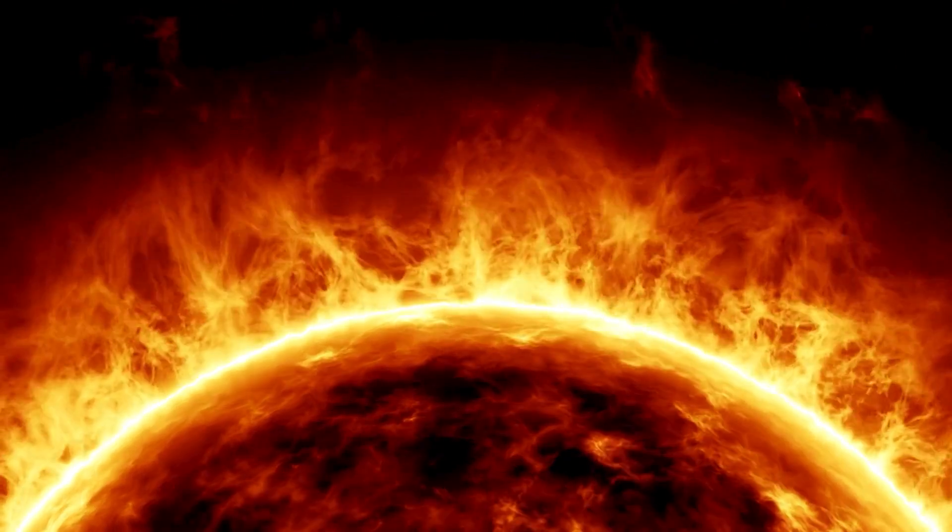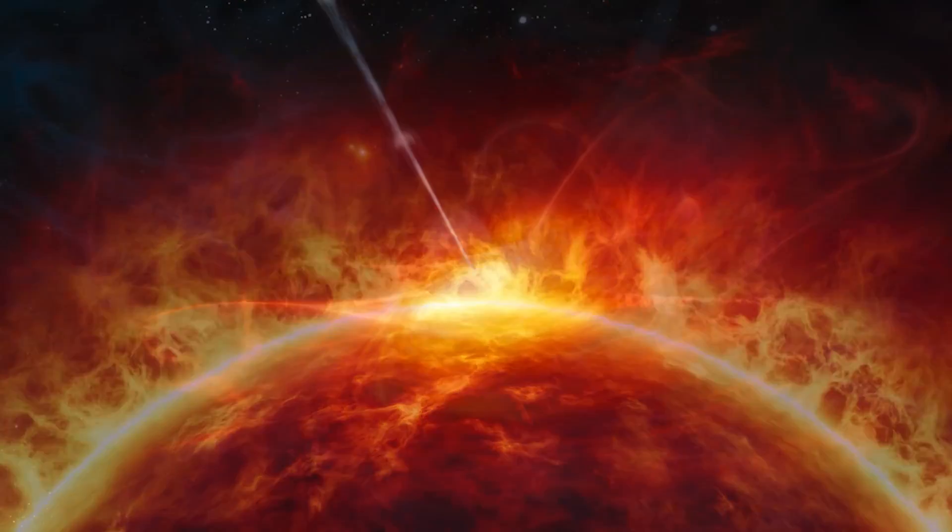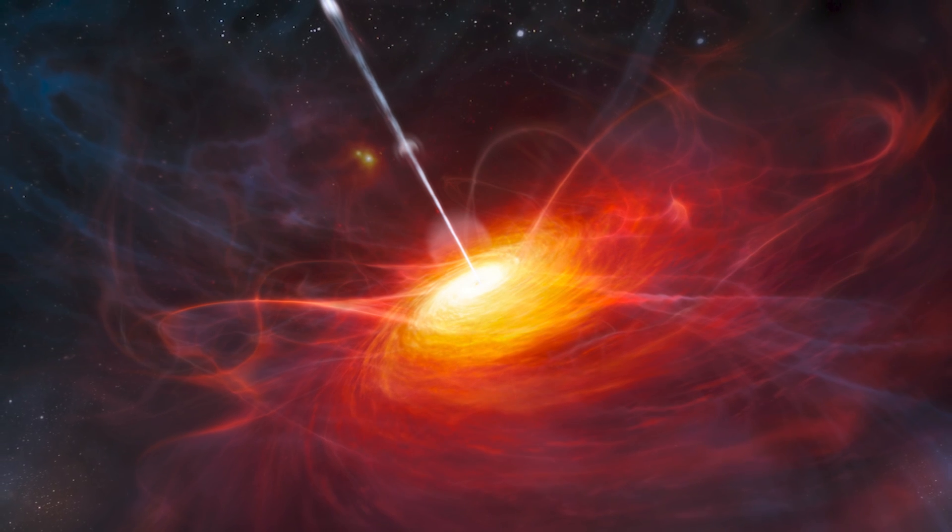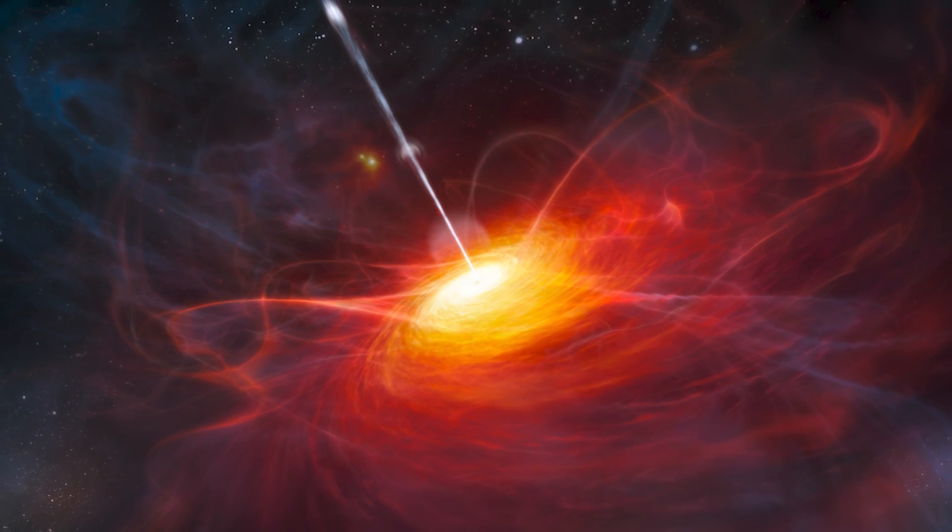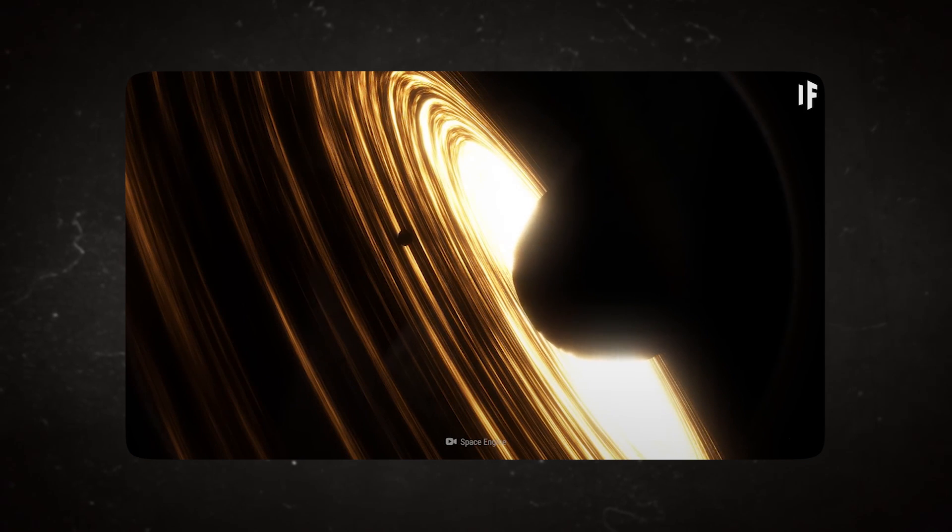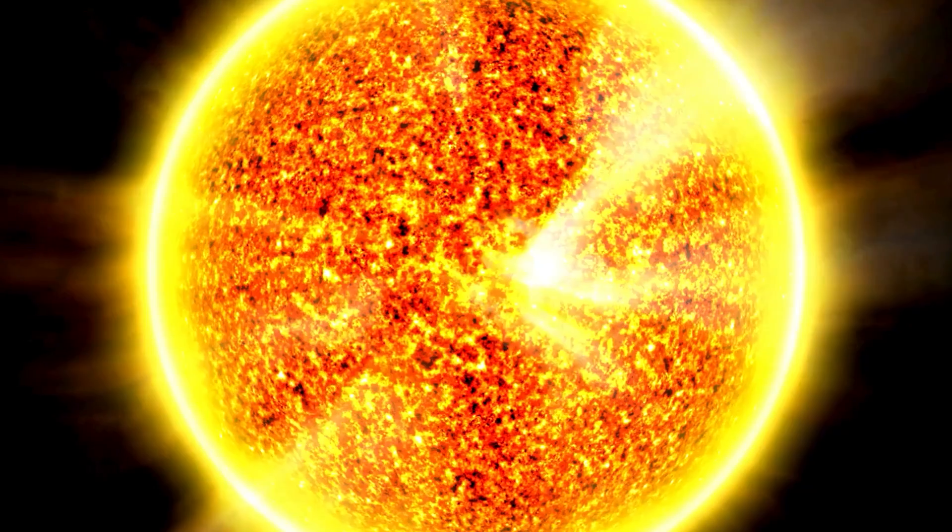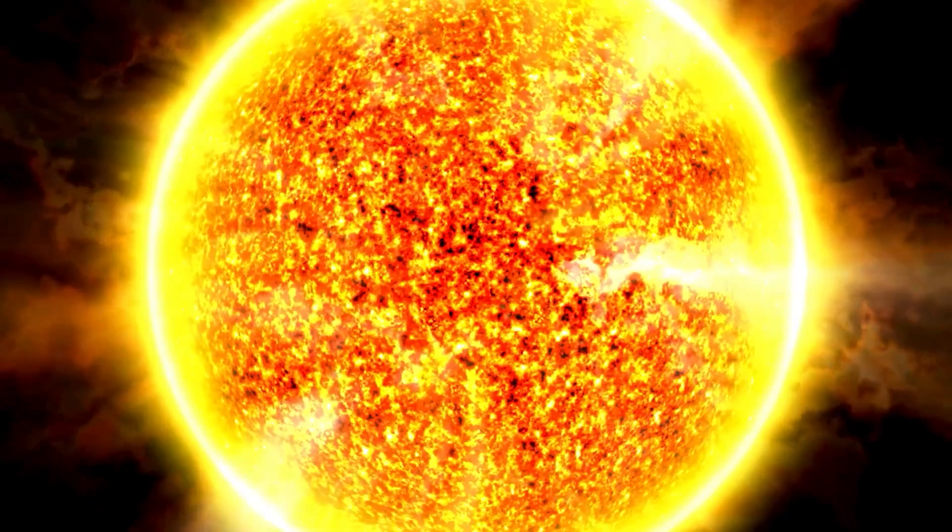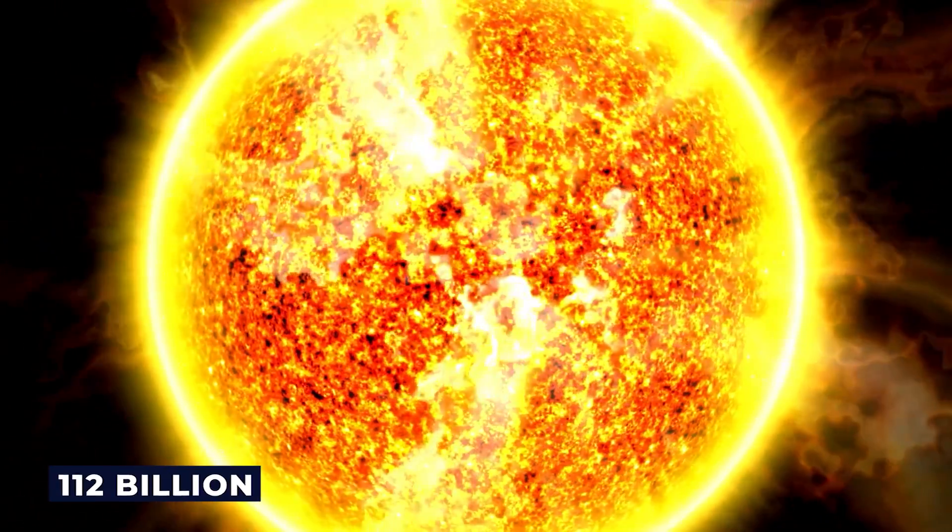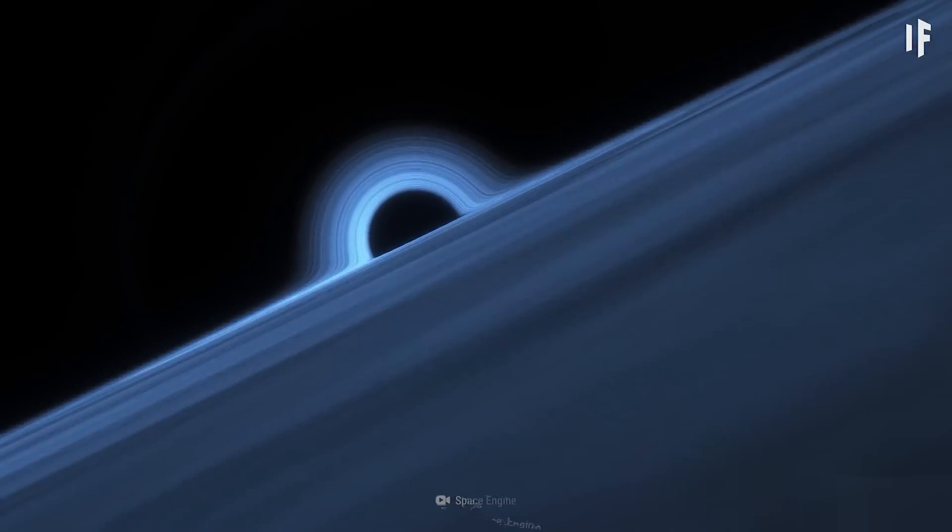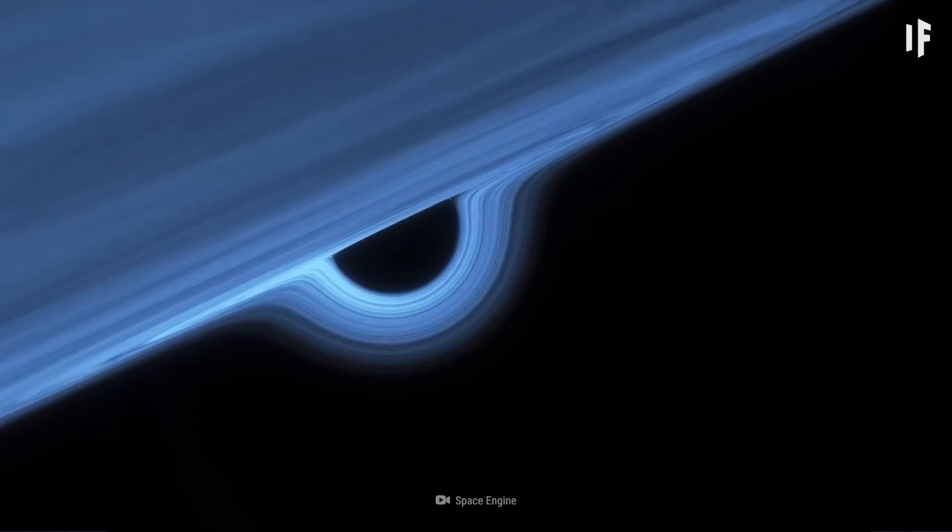Officially designated as ULAS J1342+0928, the oldest black hole ever discovered was born some 690 million years after the Big Bang that created our universe. This black hole's advanced age presents challenges for astronomers. It appears that the mass of this bright mystery is 112 billion times that of the sun. It's unclear what caused black holes to grow so enormous so quickly after the Big Bang.